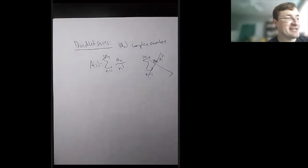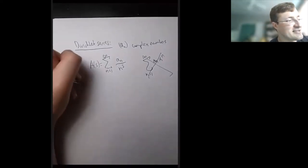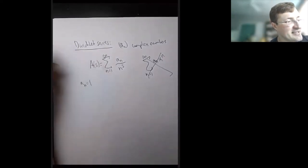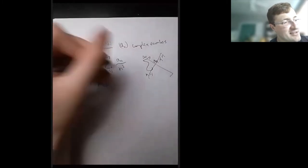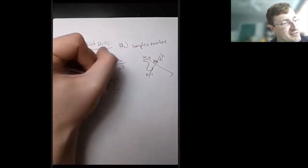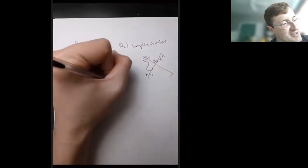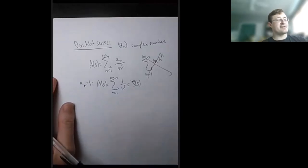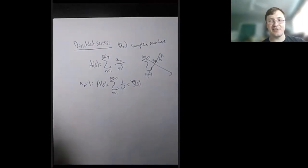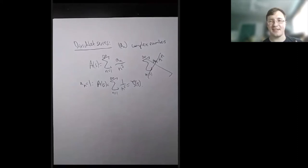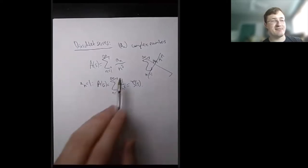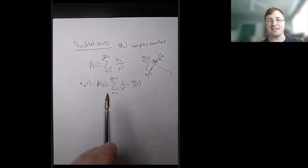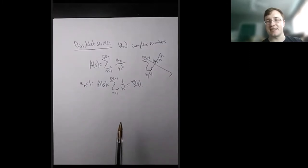As a simple — maybe the simplest interesting — example: if we take all the a_n's to be 1, we get the sum from n equals 1 to infinity of 1 over n to the s, which is the Riemann zeta function. For now I'm not going to worry too much about the convergence of these series, because that can get a little complicated. I'm really just interested in what properties these things have and what we can do with the coefficients.